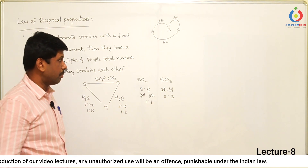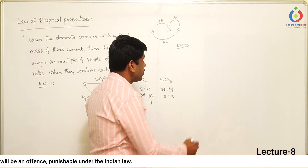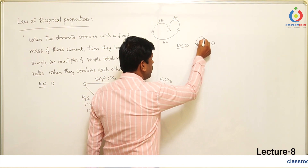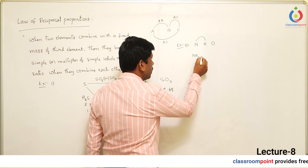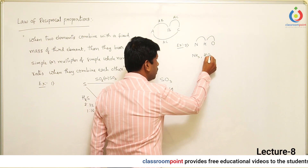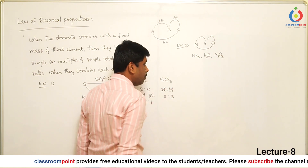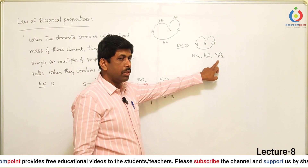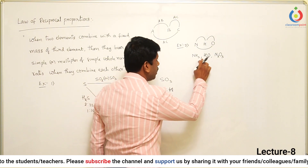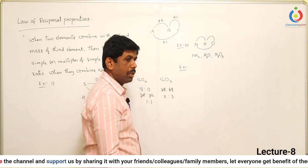Let us take some realistic examples. Take 3 elements: nitrogen, hydrogen, and oxygen. Nitrogen and hydrogen react to produce ammonia (NH₃). Hydrogen and oxygen react to produce water (H₂O). Nitrogen and oxygen react to produce N₂O₃ — though there are different oxides of nitrogen and you can take any of those. With 3 different combinations from 3 different elements, they are following the law of reciprocal proportions.